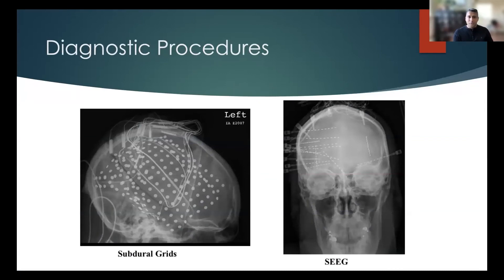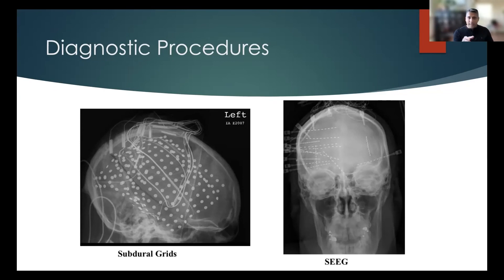There are two types of invasive monitoring procedures. On the left is a subdural grid, which involves laying grids on the surface of the brain to look for where seizures are coming from. On the right is SEEG — separate pinhole openings are made and very thin electrodes are placed into the deep parts of the brain.